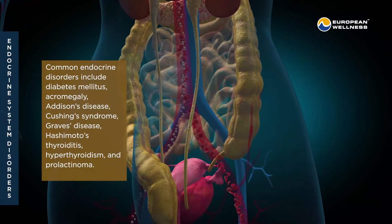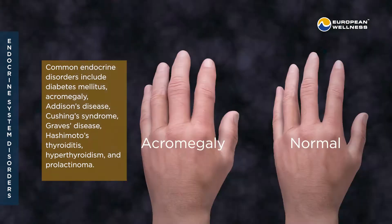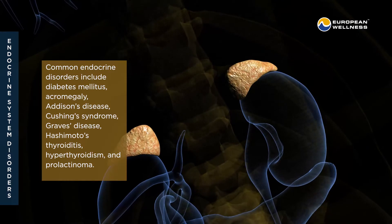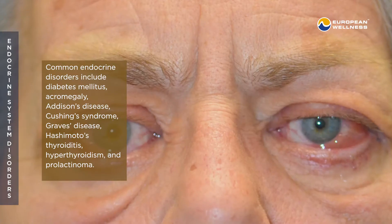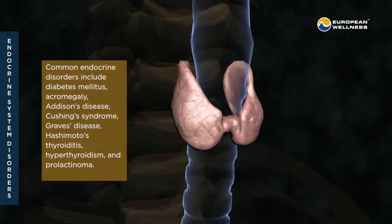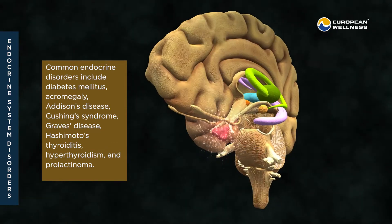Common endocrine disorders include diabetes mellitus, acromegaly, Addison's disease, Cushing's syndrome, Graves' disease, Hashimoto's thyroiditis, hyperthyroidism, and prolactinoma.